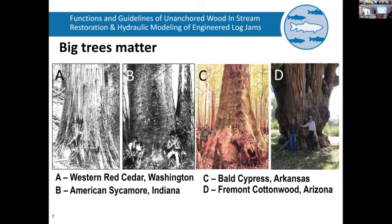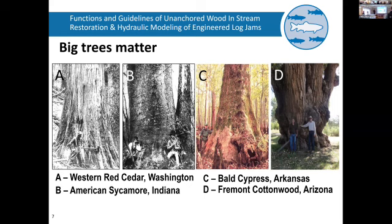Another theme is we've changed the tree and riparian populations of our rivers. There used to be a lot more big trees, just like there used to be a lot more big fish to catch. This is an American sycamore back in Indiana — they were a real prominent source of snags and wood in the Mississippi and Missouri system, along with cypress. That change has affected what's going on in the river.